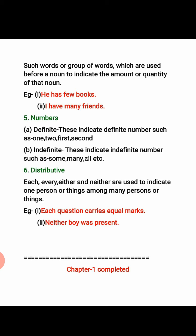Sixth type: distributives. Each, every, either, and neither are used to indicate one person or thing among many persons or things. When we need to indicate only one thing from among many, we use distributives. For example: each question carries equal marks; neither boy was present. That's all for today. Till then, bye-bye.